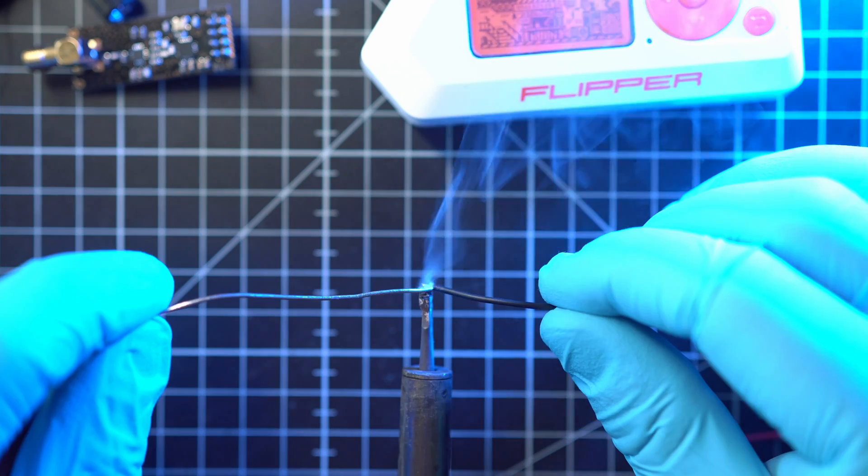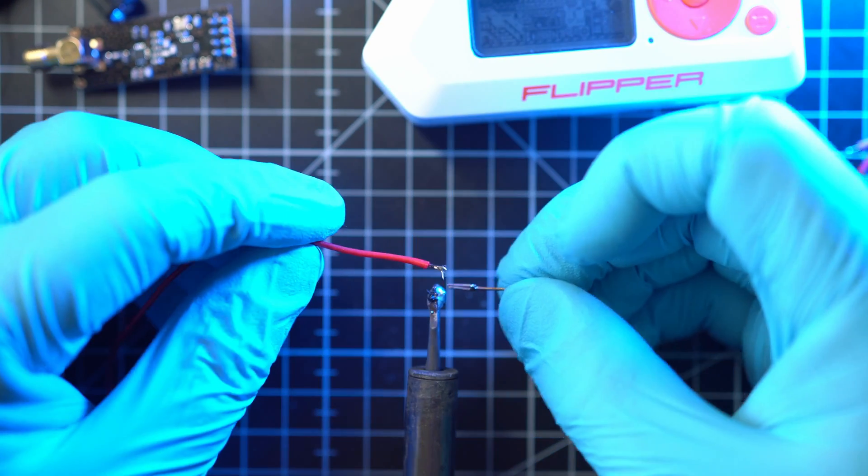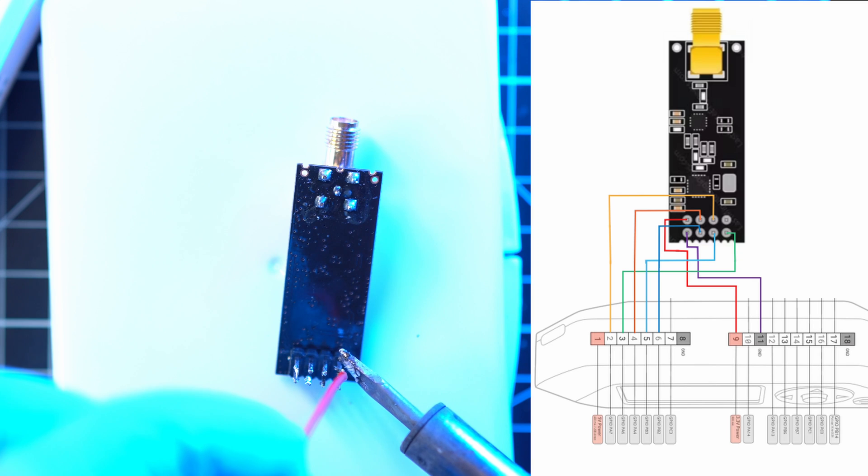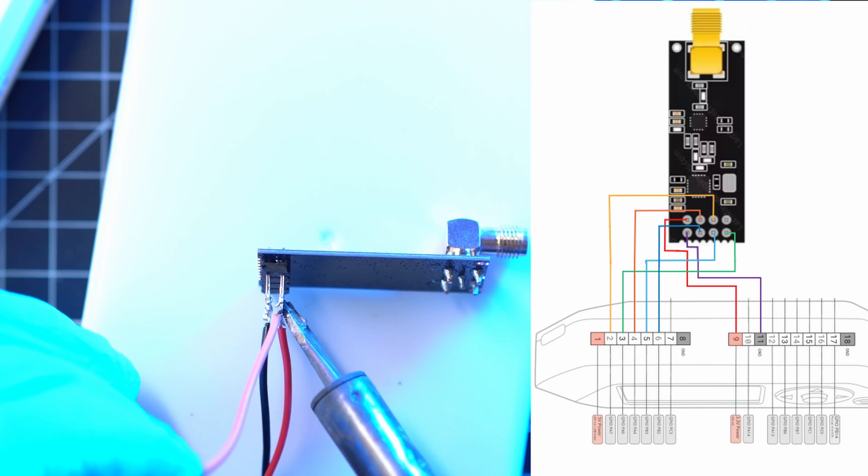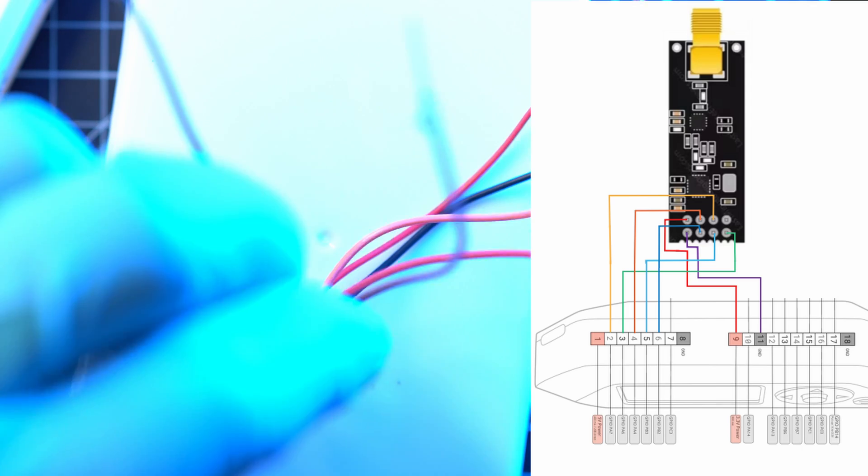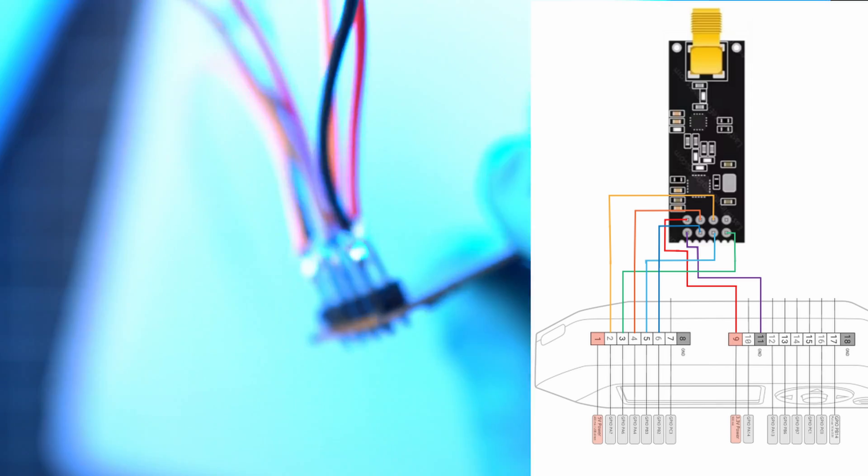So let's start soldering terminals to the cables and cables to the NRF24 module. You will need 7 wires, 2 are power and rest are communications. Just follow this wiring diagram.